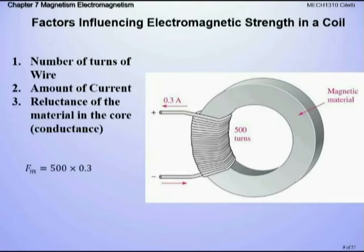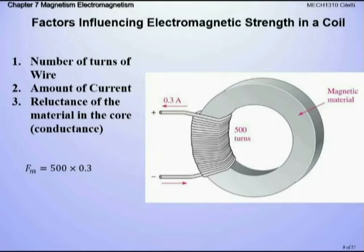The influencing factors are: the number of turns of the wire, the amount of current, and the reluctance of the material — which we'll discuss shortly. Different materials allow us to conduct magnetic fields better than others; we might use an iron-core magnet versus an aluminum-type substance. Aluminum would melt if it heats up. The magnetomotive force for 500 turns × 0.3 amps = 150 amp-turns, written as AT or A-T.